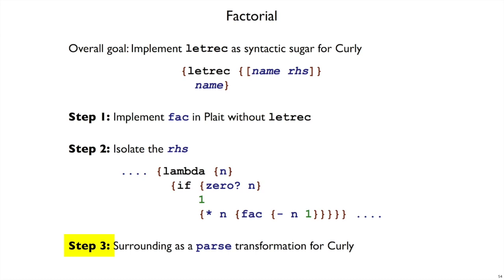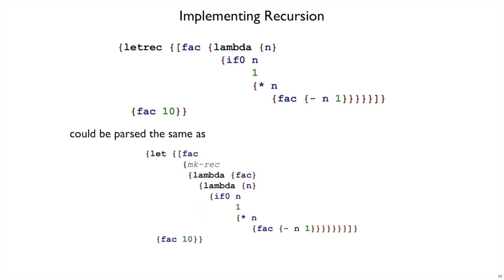That brings us to our last step, which is making the parse function actually use this transformation that we've worked on. The idea overall is that when in your curly program you have letRec fac, and then have a recursive reference back to itself, that this could be parsed the same as let fac with makeRec, lambda fac, and then that right-hand side. The whole right-hand side is going to be intact — we just have a wrapper lambda around it with the argument name determined to be the same, and we use that same name here as well, and then the body function is unmodified.